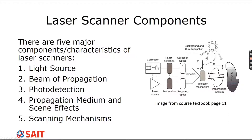We collect the return signal through the optics — a lens with mirrors that project into the receiver. The receiver is our photo detection. The sunlight comes in within the collection optics; it's detected in the collection optics, not in the projection mechanism. The LiDAR signal and the ambient light get focused together and saved as part of the laser return. This is where the sun causes problems.